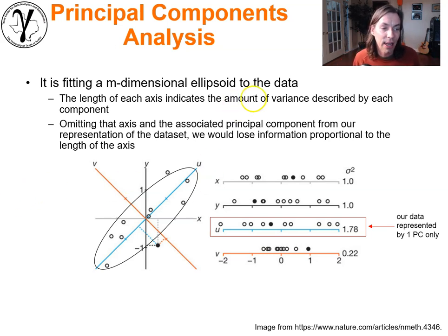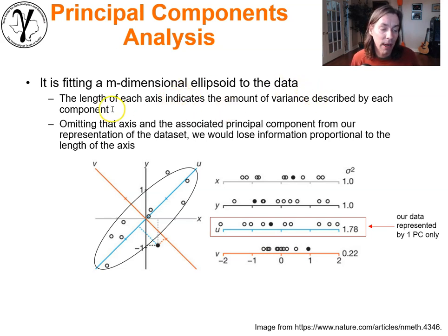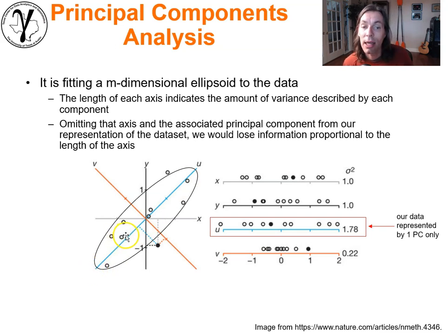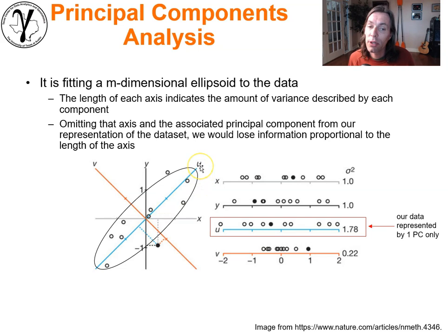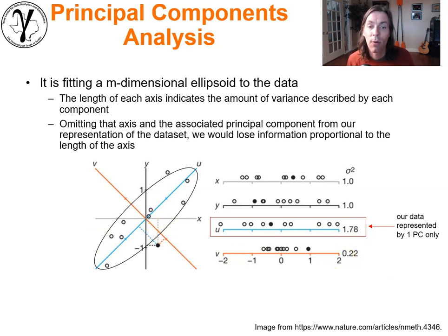It's like fitting an m-dimensional ellipsoid to the data. The length of each axis indicates the variance described by that component. The vast majority of variance is described in the first direction, represented by the eigenvalue. Omitting an axis from our representation means we lose information proportional to the length of that axis — if we retain only one principal component, we'd lose the 0.22 proportional to that radius.